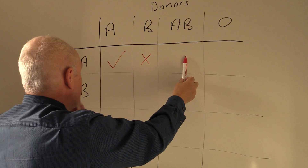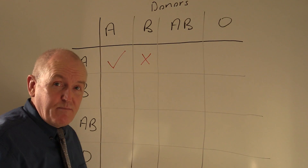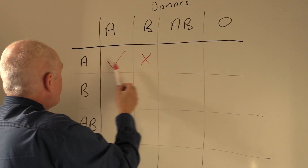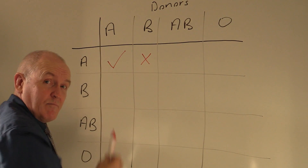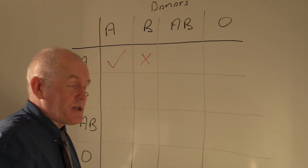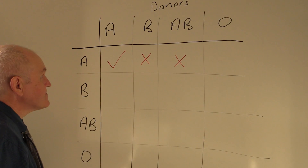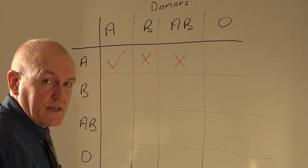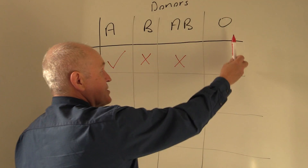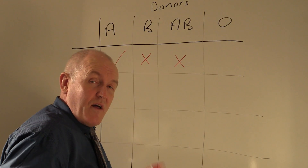AB contains A and B antigens, and in the A blood there are going to be B antibodies. So in this case the B antigens will be agglutinated by the B antibodies in the group A recipient's plasma. Clearly that is not allowed — it will give a hemolytic mismatch reaction.